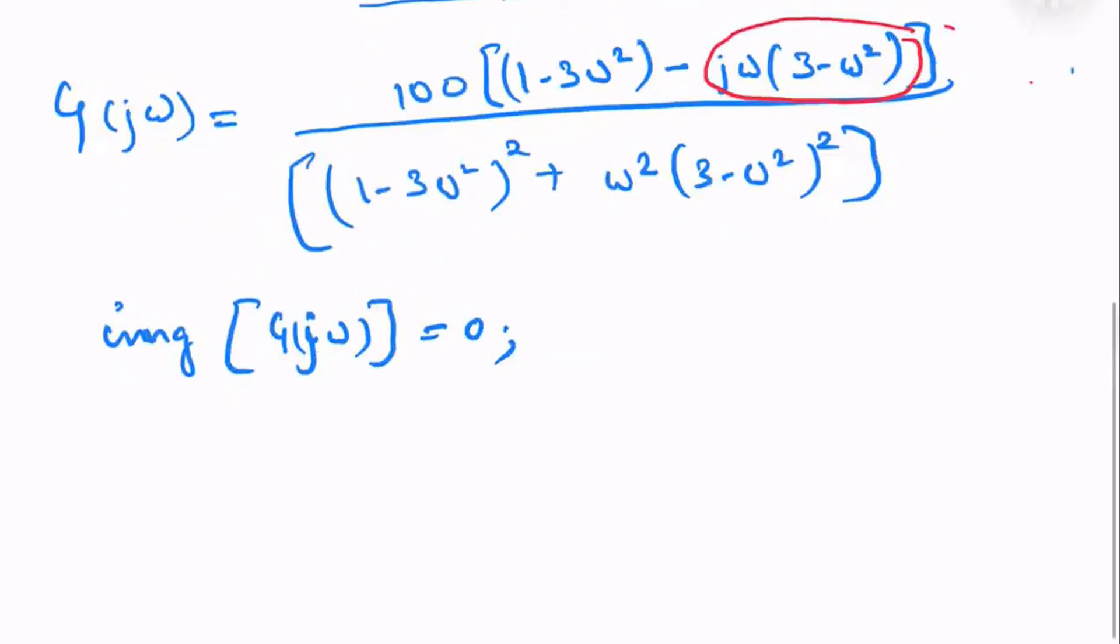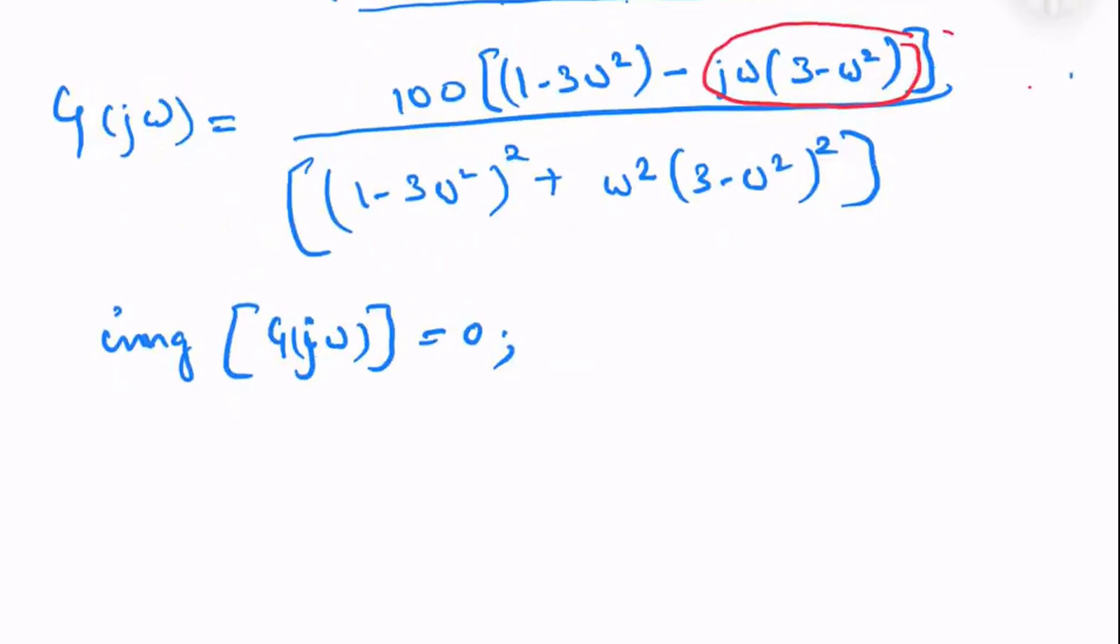Setting it to zero: ω(3 - ω²) = 0, which gives ω = 0 or ω = ±√3.